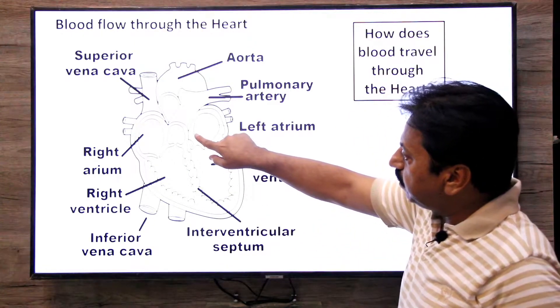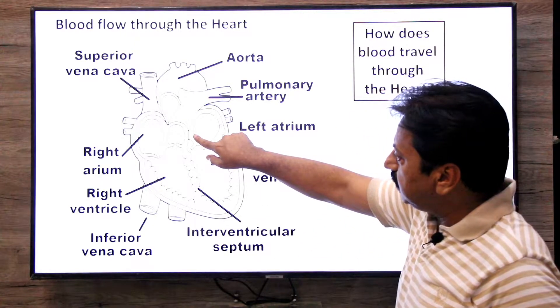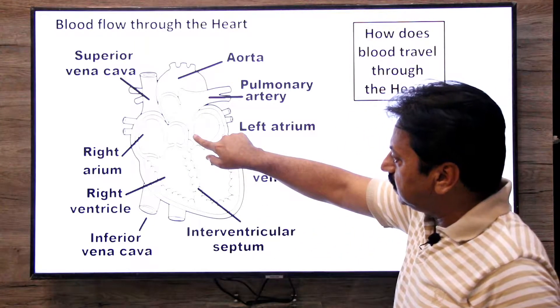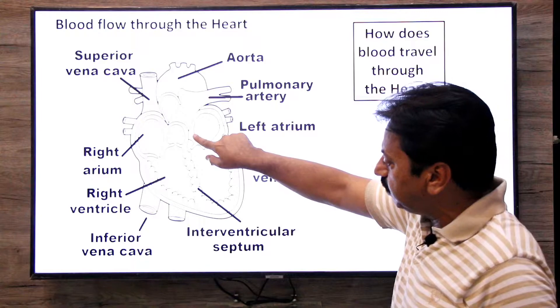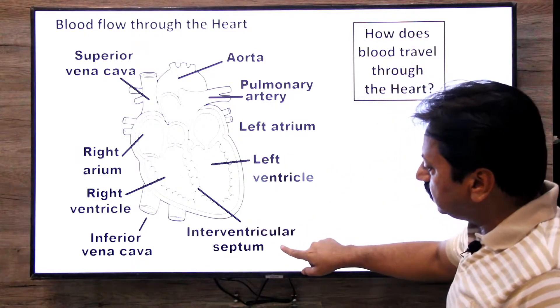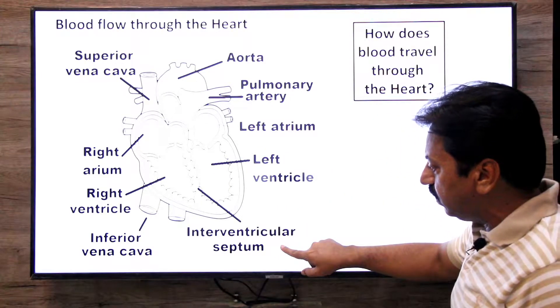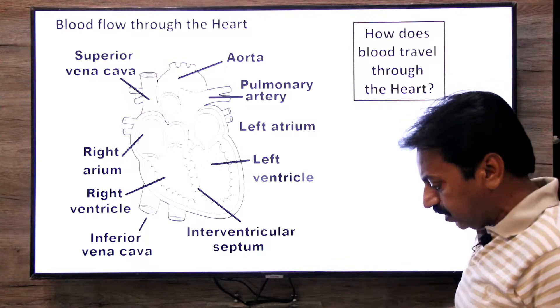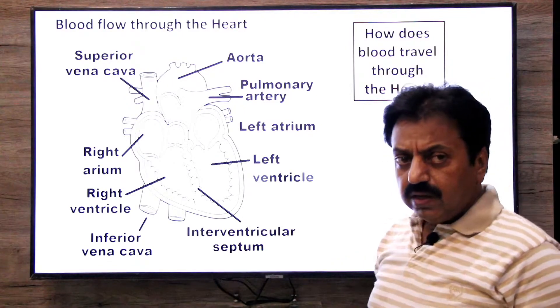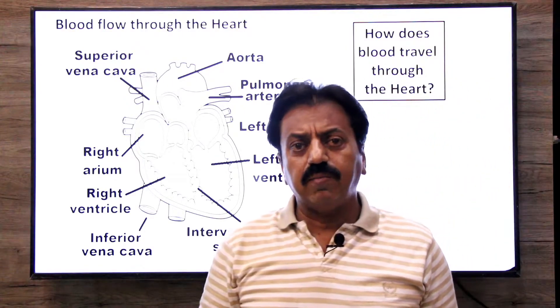The septum between the two atria is the interatrial septum, and the septum between the two ventricles is the interventricular septum.